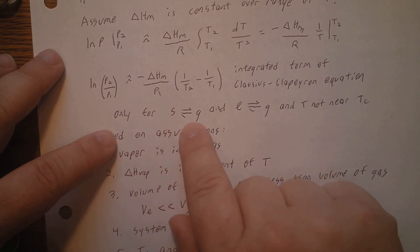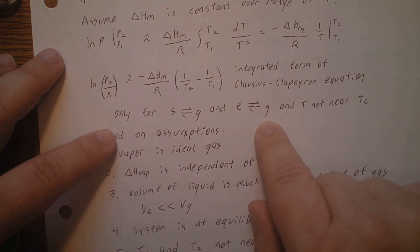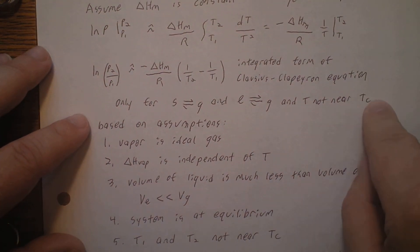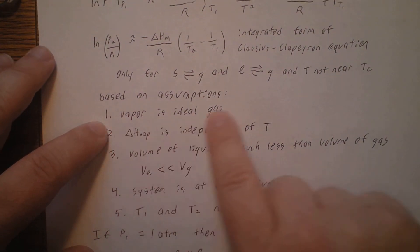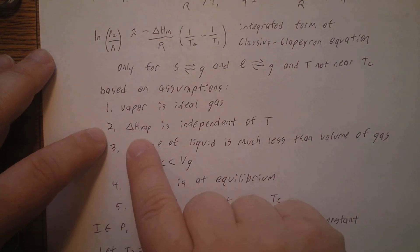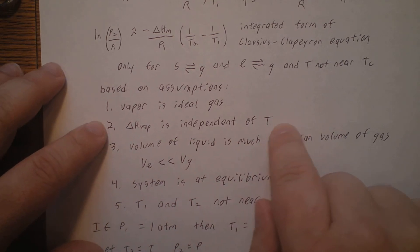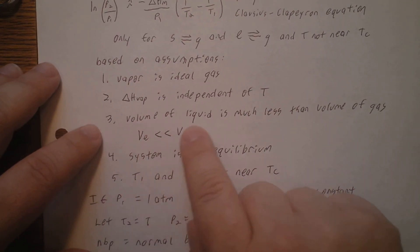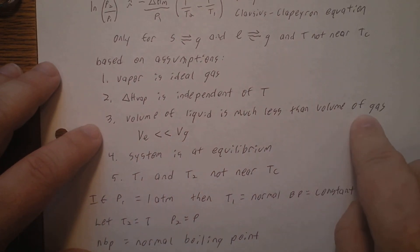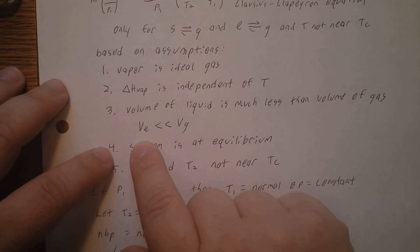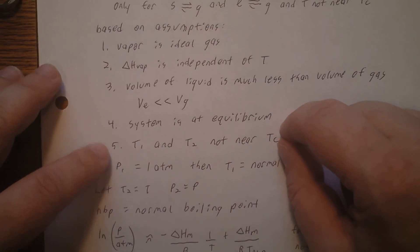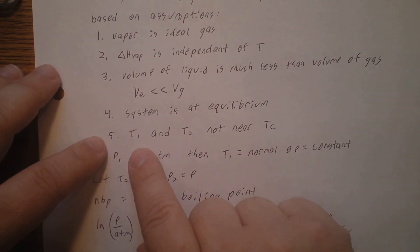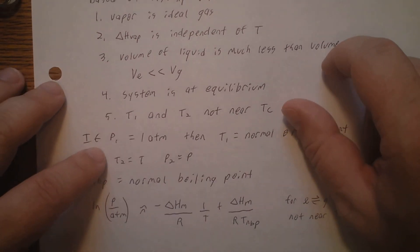This integrated form applies only to solid-gas or liquid-gas equilibrium and not near the critical temperature. The underlying assumptions are: (1) the vapor is an ideal gas; (2) the enthalpy of vaporization is independent of temperature; (3) the volume of the liquid is much less than the volume of the gas, VL ≪ VG; (4) the system is at equilibrium; and (5) T1 and T2 are nowhere near the critical temperature.